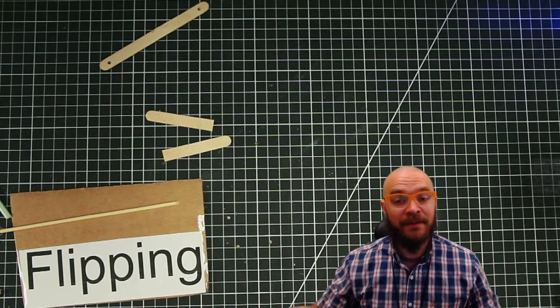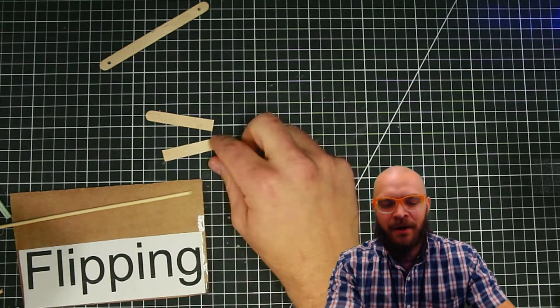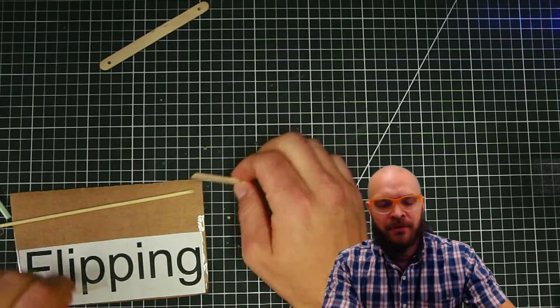Here's the handy mechanism we're going to have flipping up and down. Now I'm just going to make it a rectangle. You can make it whatever you like.